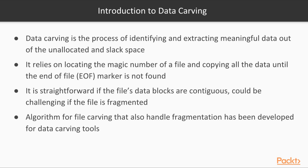In previous sections, we've seen that files are identifiable through the magic numbers included in the file's header. Data carving relies on locating the magic number of a certain type of file and copying all the binary data between it and the corresponding end of file marker, or EOF.